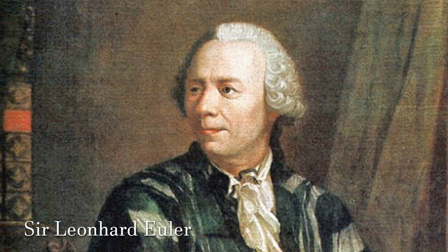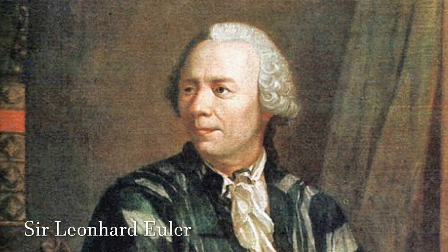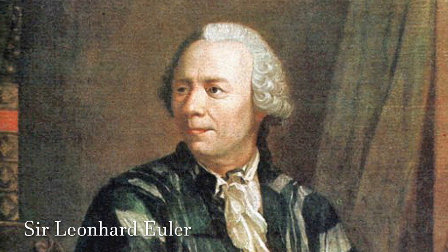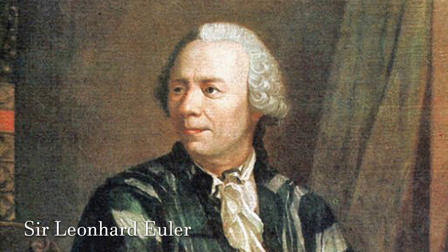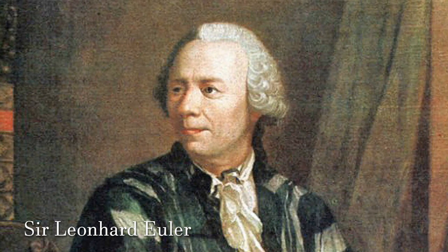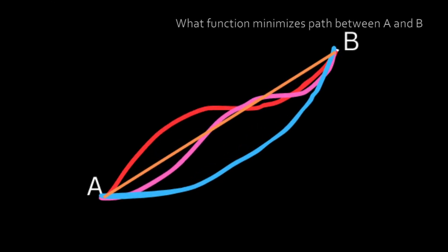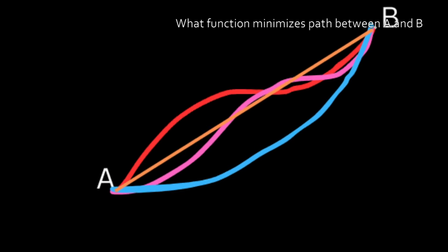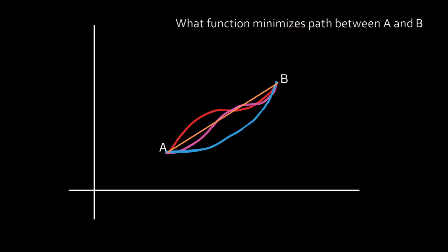During the same time, Leonard Euler formulated his form of action principle under quite a different framework, as he was studying calculus of variations at the time. In a nutshell, consider two points A and B on Euclidean 2D plane such that there is infinite number of possible functions which connect the two points. What function will minimize the path between A and B? Intuitively, it is easy to guess that it will be a straight line. But this must be proved formally.